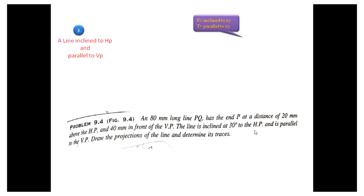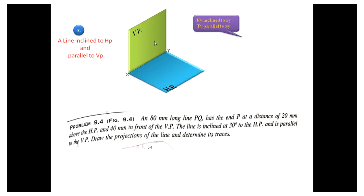This is condition four: a line is inclined to HP and parallel to VP. The blue color is the horizontal plane and the green color is the vertical plane. In this question the line PQ is inclined to HP and the length of this line is 80mm.